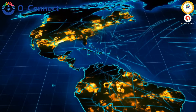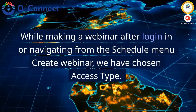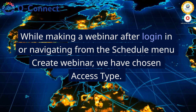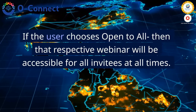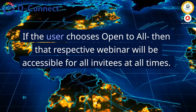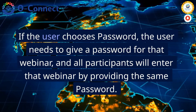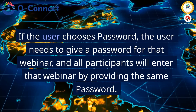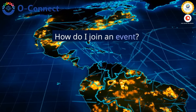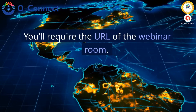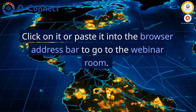13. How do I enter a scheduled event or a permanent room? While creating a webinar after logging in or navigating from the schedule menu Create Webinar, you choose Access Type. If the user chooses Open to all, then that respective webinar will be accessible for all invitees at all times. If the user chooses password, the user needs to provide a password for that webinar, and all participants will enter by providing the same password.